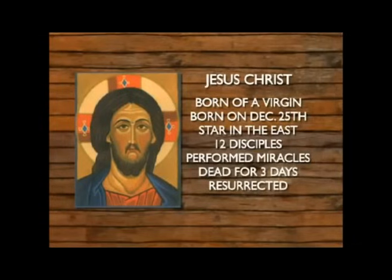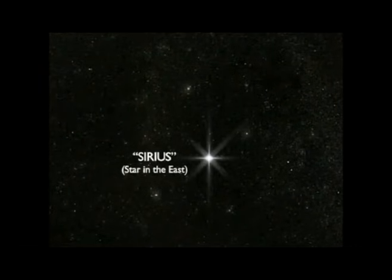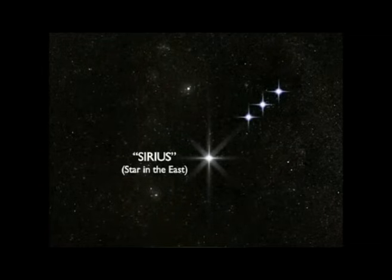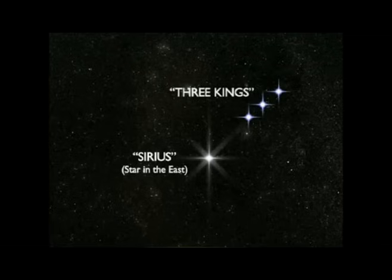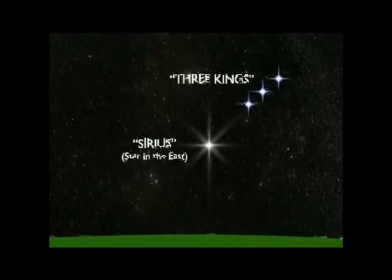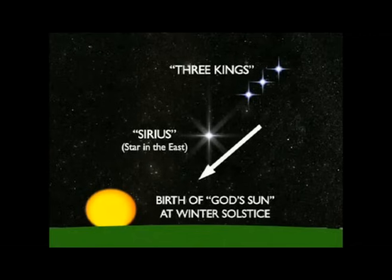First of all, the birth sequence is completely astrological. The star in the east is Sirius, the brightest star in the night sky, which on December 24th aligns with the three brightest stars in Orion's belt. These three bright stars in Orion's belt are called, today as in ancient times, the three kings. And the three kings and Sirius all point to the place of the sunrise on December 25th. This is why the three kings follow the star in the east — in order to locate the sunrise, the birth of the sun.